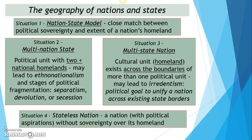Moving on, we're going to look at some definitions and geography related to the idea of nations and states — all things you need to know. Situation one, which is the historical ideal particularly coming out of Europe, is the nation-state model: a close match between political sovereignty — governmental control — and the extent of a nation's homeland, that area they can identify as 'our space.'